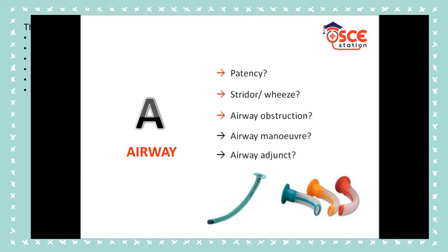Consider an airway manoeuvre such as head tilt, chin lift or jaw thrust. You may want to escalate to a senior and insert an airway adjunct such as a nasopharyngeal tube, or if the GCS is less than 8, use a Guedel airway.